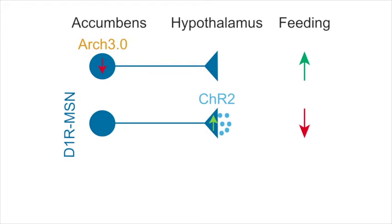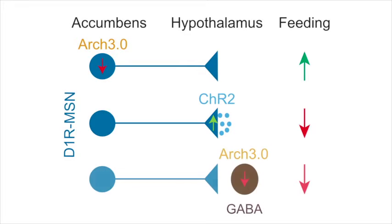In the final series of experiments, we demonstrated that GABAergic neurons in the LH were a functional target of D1-MSNs and that direct inhibition of these GABA neurons was sufficient to rapidly stop feeding, even in food deprived mice.